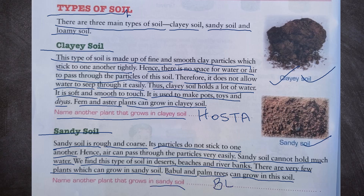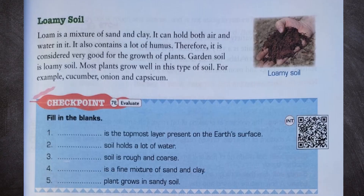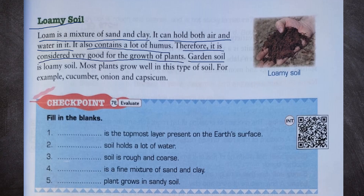Next we have loamy soil. Loam is a mixture of sand and clay. It can hold both air and water, and also contains a lot of humus. Therefore it is considered very good for the growth of plants. Garden soil is loamy soil and most plants grow well in this type of soil — for example, cucumber, onion, and dandelion.